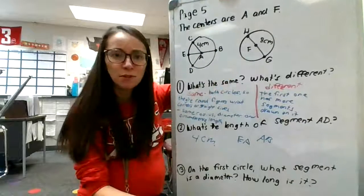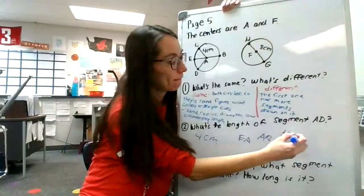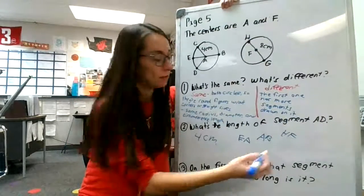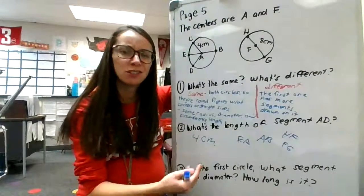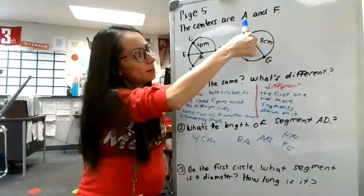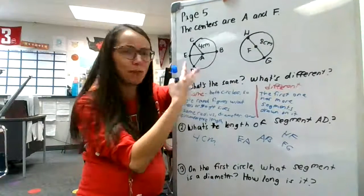How about over here? Do you see anything else that would be four centimeters? Yeah, HF. FG. I might have missed one, but yeah, get the gist of it. Those are all radii. That's when you have more than one radius, the radii. Those are all radii.